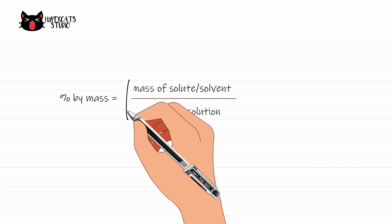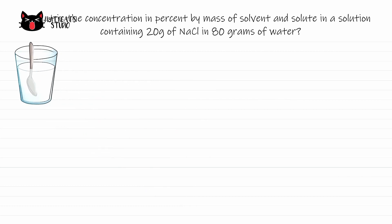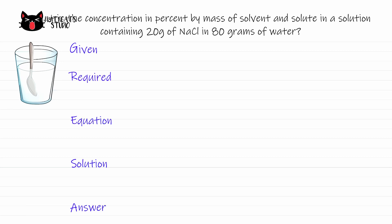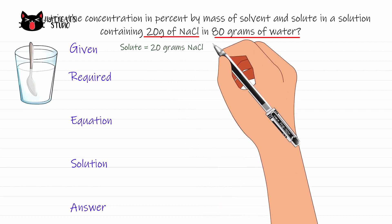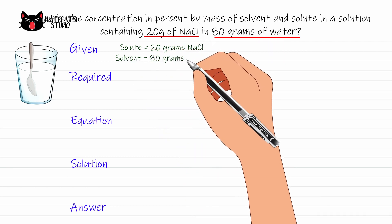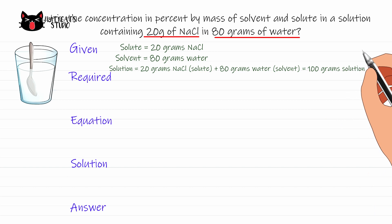For example: what is the concentration in percent by mass of solvent and solute in a solution containing 20 grams of sodium chloride in 80 grams of water? To answer this, we are going to use GRESA — which stands for Given, Required, Equation, Solution, and Answer. The first step is to list down the given: mass of solute is 20 grams of sodium chloride, and mass of solvent is 80 grams of water. Adding solute and solvent gives a total of 100 grams of solution.